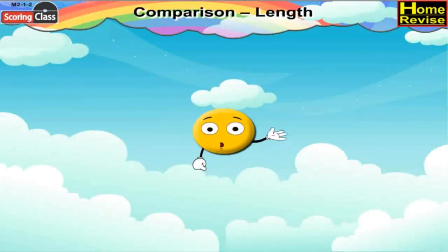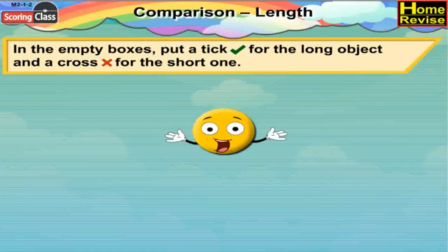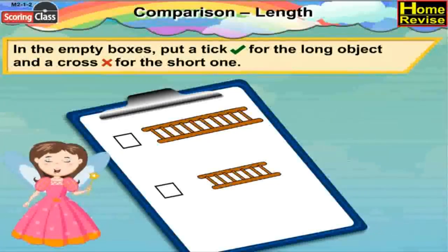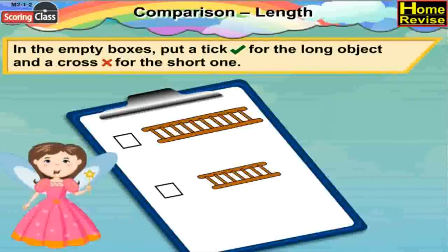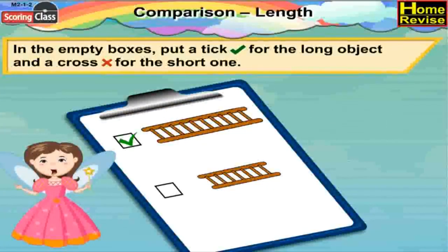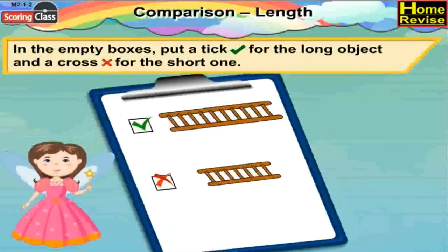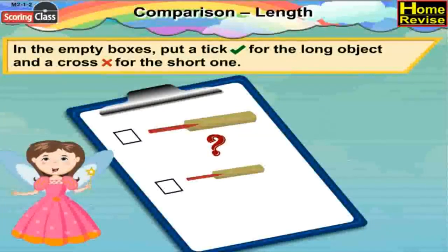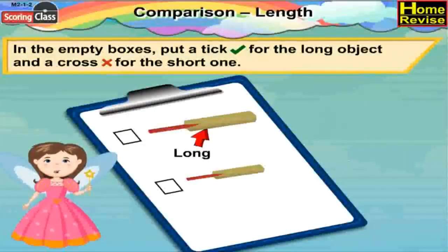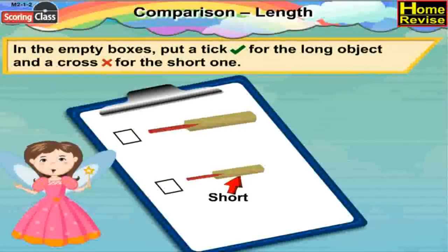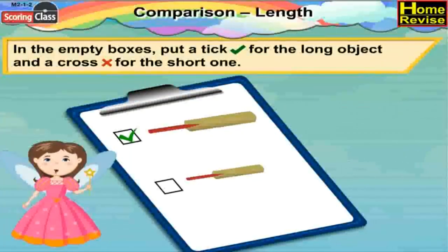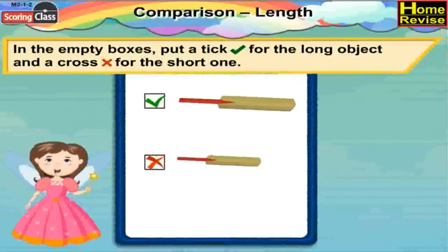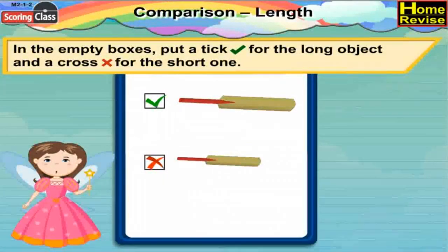Now kids, let us solve this. In the empty boxes, put a tick for the long object and a cross for the short object. In these two ladders, which one is long and which one is short? Yes, you're right, my genius — the first one is long, so we'll put a tick for it and a cross for the second. Now we have two bats — the first bat is long and the second bat is short, so put a tick in front of the first bat and a cross in front of the second bat.